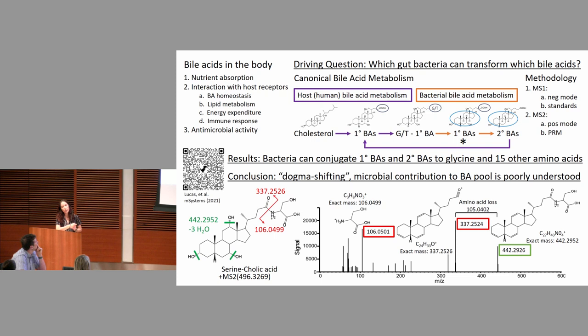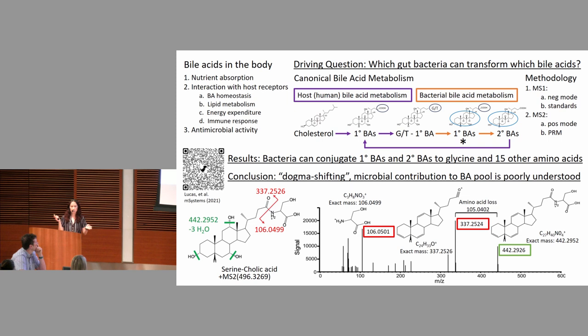Things such as lipid and glucose metabolism, bile acid homeostasis, but also things you might not think about like energy expenditure, immune response — I've even read that itchiness can be related to bile acid metabolism. So, two primary bile acids are made from cholesterol by host enzymes. These bile acids get conjugated to glycine or taurine, also by the host, and then those conjugated bile acids travel into the intestines and are deconjugated again.